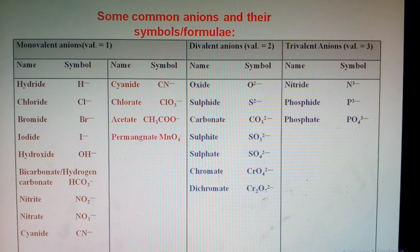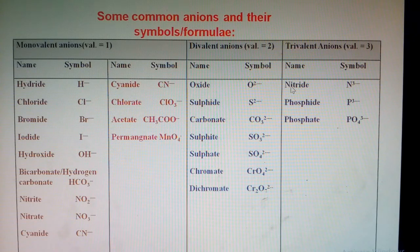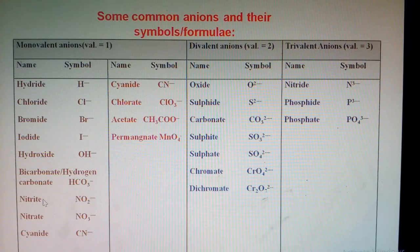Similarly, we have a valency chart for anions. You should remember the name, symbol, and charge. Monovalent anions include hydride, chloride, bromide, hydroxide, bicarbonate, nitrite, nitrate, cyanide, acetate, and permanganate. Divalent anions include oxide, sulfide, carbonate, sulfate, chromate, and dichromate. Trivalent anions include nitride, phosphide, and phosphate. Don't get confused between nitride, nitrate, and nitrite.